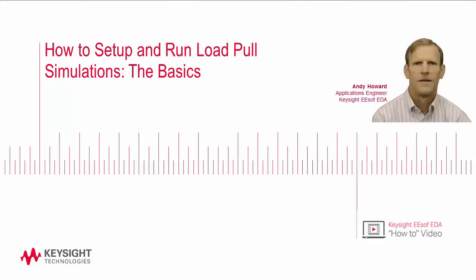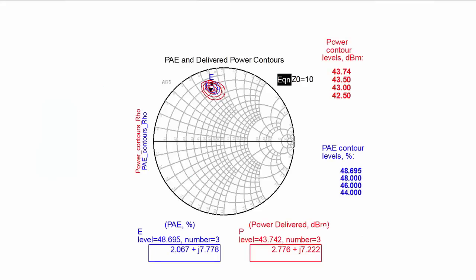We will run LoadPull on a Cree GAN device at 10 GHz with the objective of delivering greater than 20 watts, or 43 dBm, while maximizing PAE. We'll see how the bias point affects performance and examine tradeoffs.